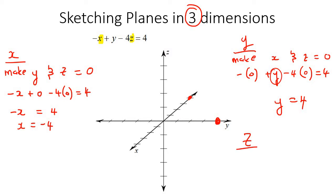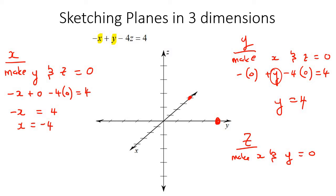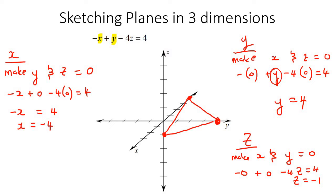Now we need to find z. Obviously, you make x and y equal to zero. So that's minus zero plus zero minus four z equals four. Working out z, you get z equals negative one. Positive z is one direction, negative z is the other, so we go down by one. Now just take a straight edge and connect all the dots together — there, there, and there. Pretty easy! And that's it.